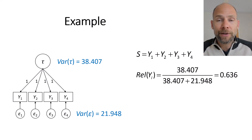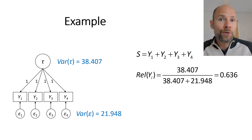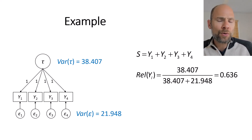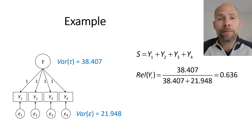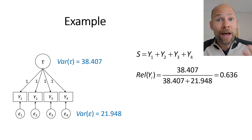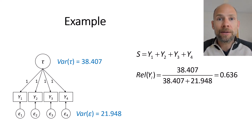So assuming the parallel measurement model is correct, each of the four math subtests has a reliability of 0.636, meaning 63.6% of the variance in the test score is true score variance. That's not super great — only about two-thirds of the observed variance represents true score variance, and more than a third represents error variance. That is a lot of measurement error.